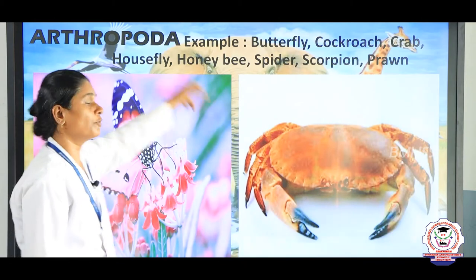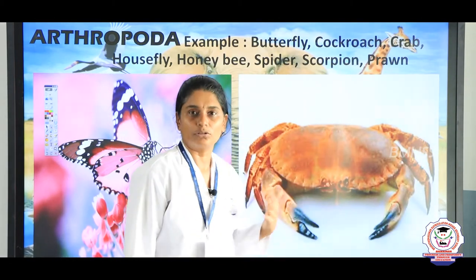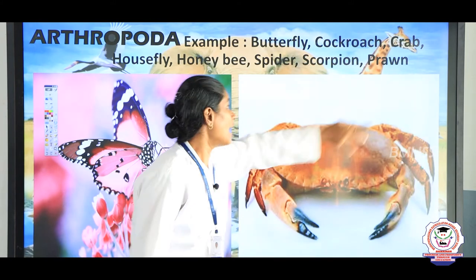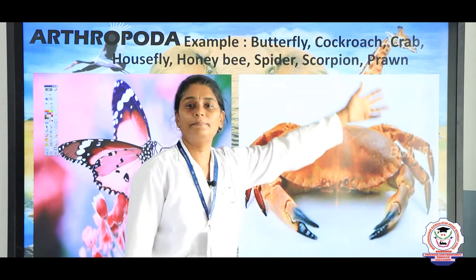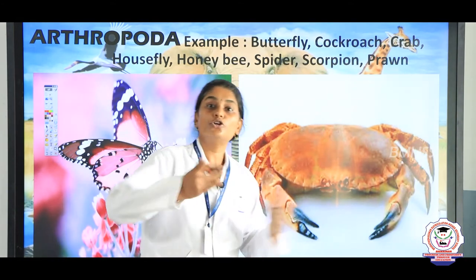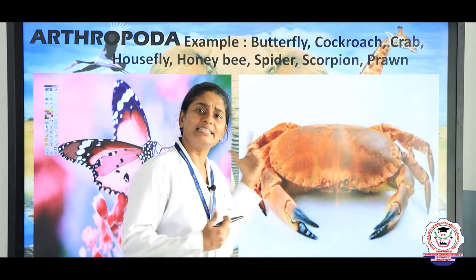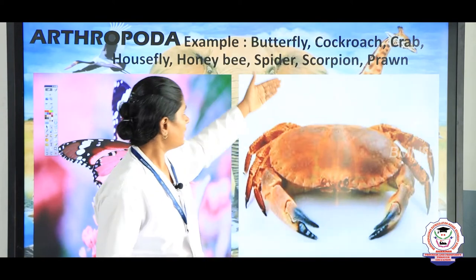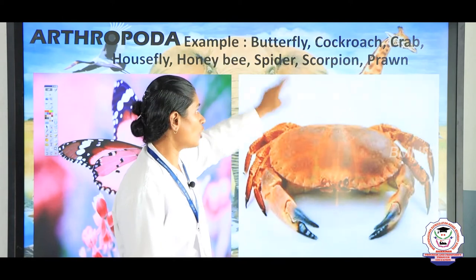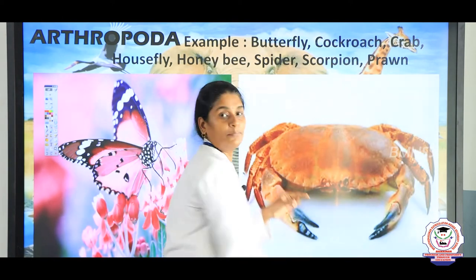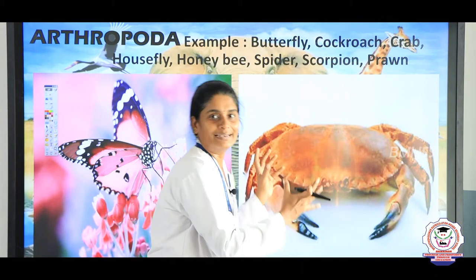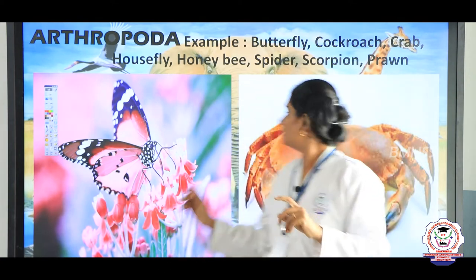The sixth phylum is Arthropoda. 'Arthro' refers to joint and 'poda' refers to legs, so these animals have jointed legs. Examples include butterfly, cockroach, crab, housefly, honeybee, spider, scorpion, and prawn. The body covering is a hard shell made up of calcium carbonate, known as the exoskeleton. You can see here butterfly, crab, cockroach, housefly, and honeybee — they all have jointed legs and an exoskeleton.